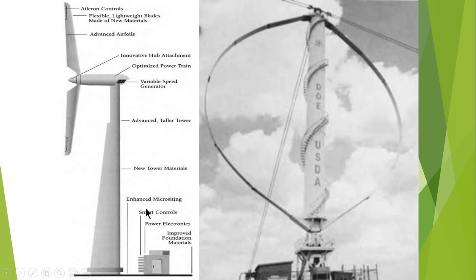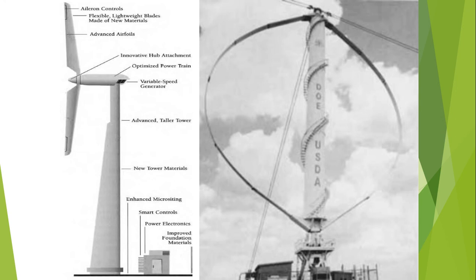Enhanced micro-siting is used to create wind farms, and electronic components include smart controls that may use algorithms like PID, sliding mode control, super twisting, or other control strategies to maintain a steady power output. They signal their output to power electronics, and improved foundation materials have been proposed to give the structure added stability.